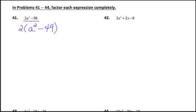Now I notice that this is two terms with a minus sign in between, so I have to factor this again. The reason it's factorable is because it's called the difference of squares. The 49 is a perfect square — the square root of it is the number 7. This can be factored into (a + 7) and (a − 7). It doesn't matter which order you put those in.